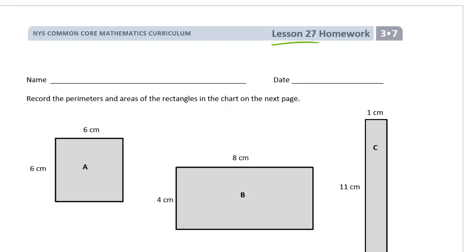Welcome to the homework for lesson 27. It's module 7 of third grade. Please write your name first. Record the perimeters and areas of the rectangles in the chart on the next page.